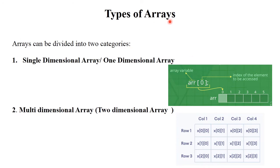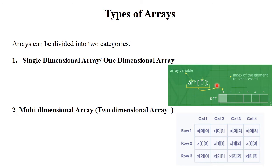There are two types of array. Single dimensional array, which is also called as one dimensional array, and multidimensional array, that is two dimensional array. Single dimensional array stores all the data in sequential format, one by one. Multidimensional array stores all the data in rows and columns format, which is also called as tabular format or matrix format.